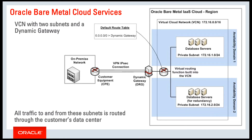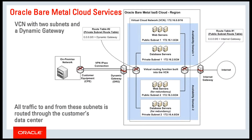Here's an example of a virtual cloud network with no direct internet access. In this case, all traffic to and from compute instances is routed through a VPN connection to a customer's on-premises network.